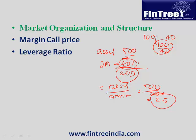An even smarter shortcut: take the initial margin value — say 0.40 — enter it on your calculator and press the 1/X button. You directly get the leverage ratio of 2.5, because it's simply 1 divided by 0.4.